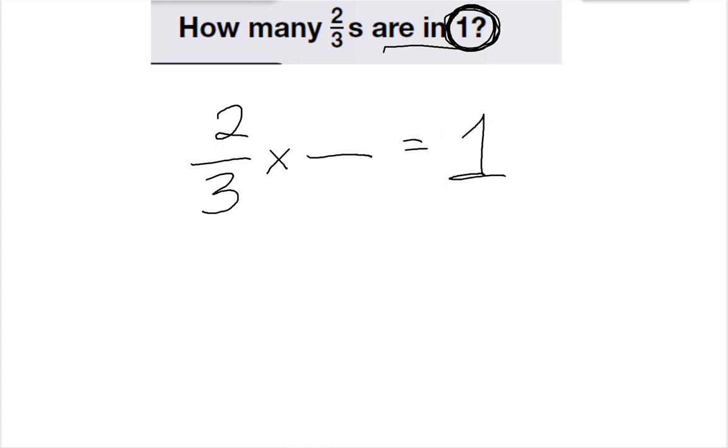Well, the way we find the reciprocal is we take the fraction that we're given and we flip the two numbers. So 2 thirds becomes 3 halves. So the reciprocal of 2 thirds is 3 halves.